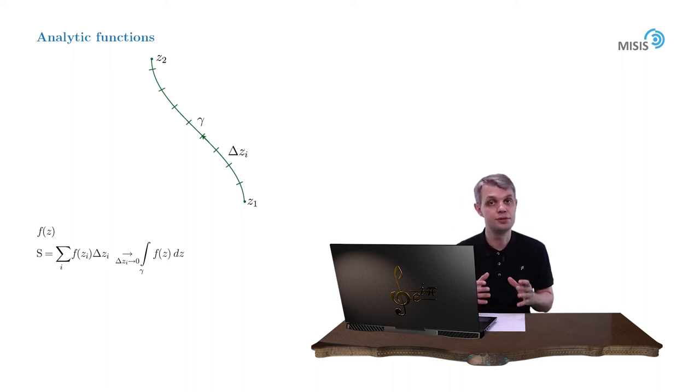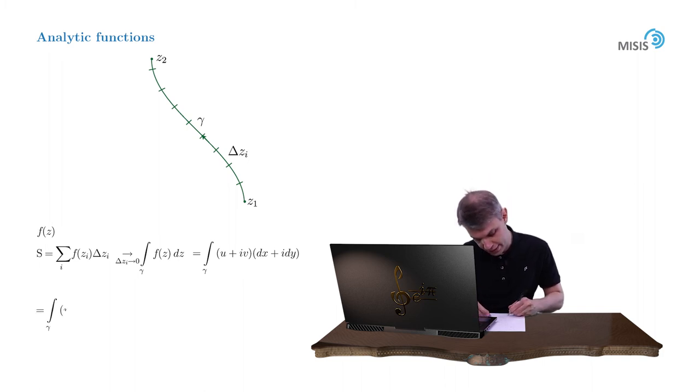This complex integral can be split into two two-dimensional integrals in a natural way. We substitute f with u plus iv and dz with dx plus i dy. And we obtain two real valued integrals: u dx minus v dy plus i times u dy plus v dx.